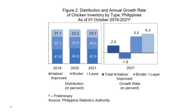The country's total chicken population as of October 1, 2021 was estimated at 190.74 million birds. Of the total inventory, native/improved chicken contributed 42.9%, broiler 34%, and layer chicken 23.1%. Broiler and layer chicken inventories grew by 5.5% and 6.3% respectively, while native or improved chicken stocks declined by negative 1.9%.